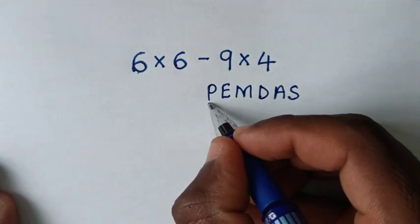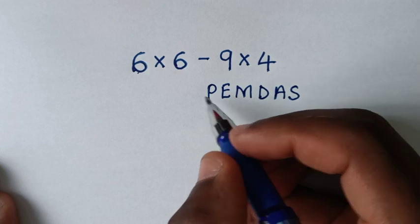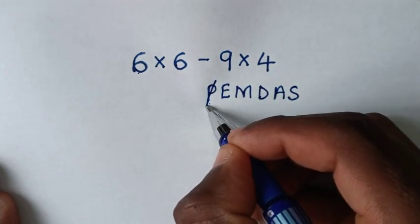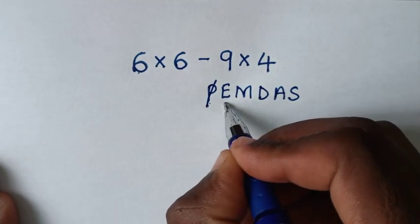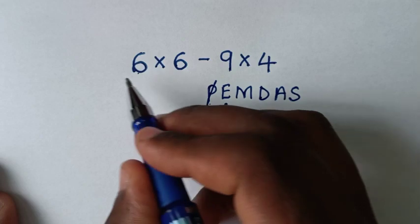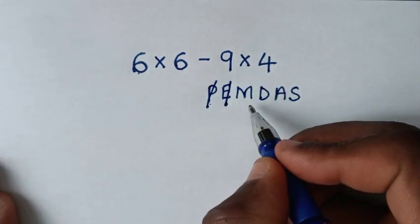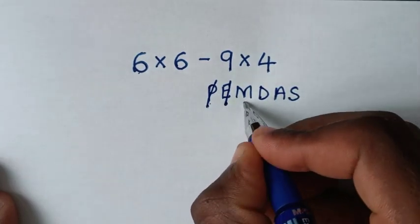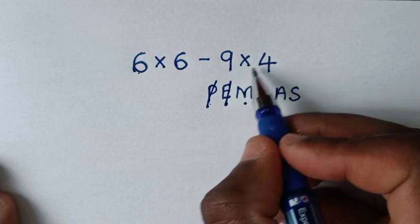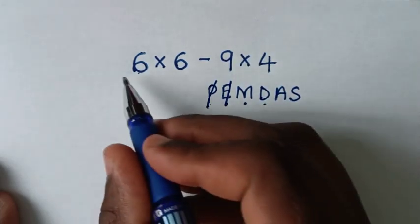P is parenthesis or brackets - in this problem we don't have parenthesis. E is exponents or orders - we don't have exponents. M is multiplication - we have two multiplications here. D is division - we don't have division in this problem.